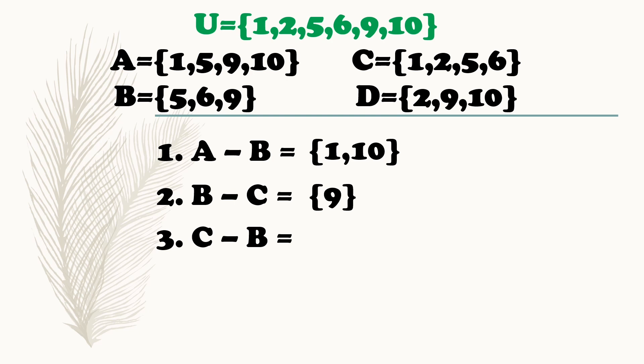Next, difference of set C and set B. Elements of set C: 1, 2, 5, 6. Set B: 5, 6, 9. Ano yung elements? 5 at 6. Kapag tinanggal yung 5 at 6, ano ang matitira kay set C? 1, 2.